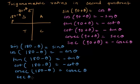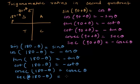The last one — sec of 180 minus theta. Because of the second quadrant, sec becomes negative, and because of 180 degrees, sec remains sec theta.